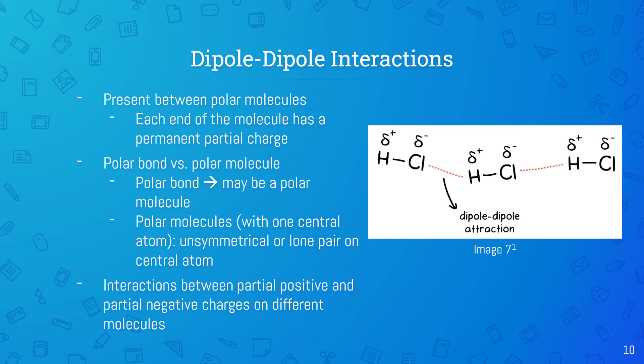For molecules with one central atom, if the molecule is unsymmetrical or has a lone pair of electrons on the central atom, then it is a polar molecule. Because polar molecules have partially charged ends, the interactions will occur between partial positive and partial negative charges on different molecules. You can see that in this image.